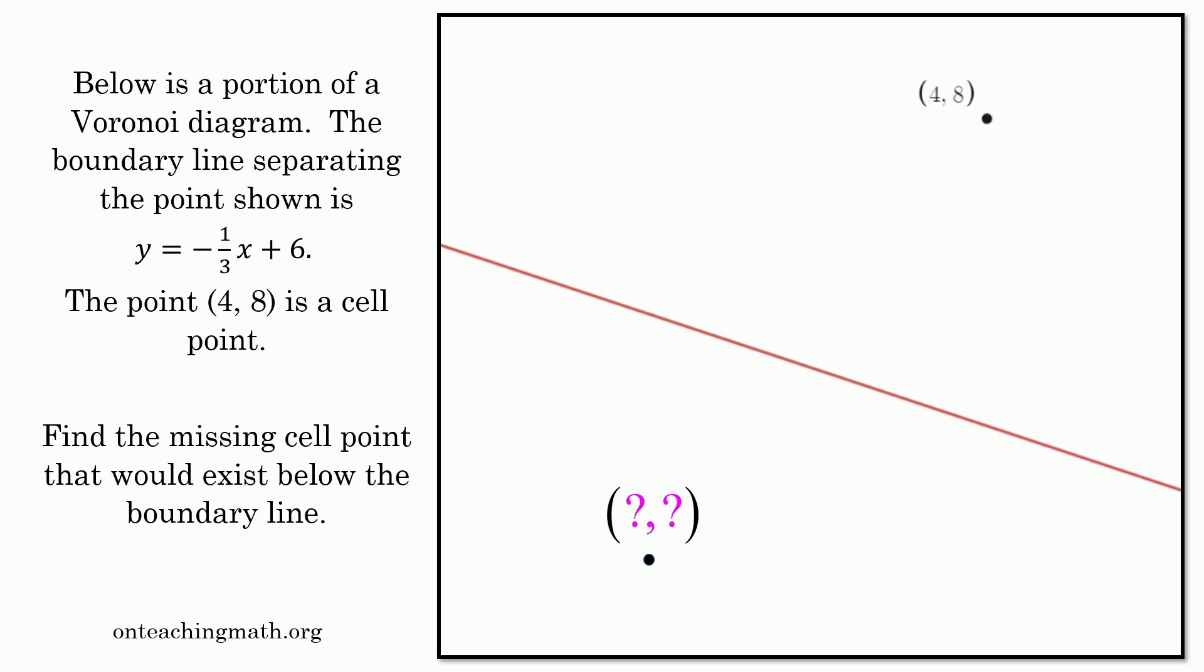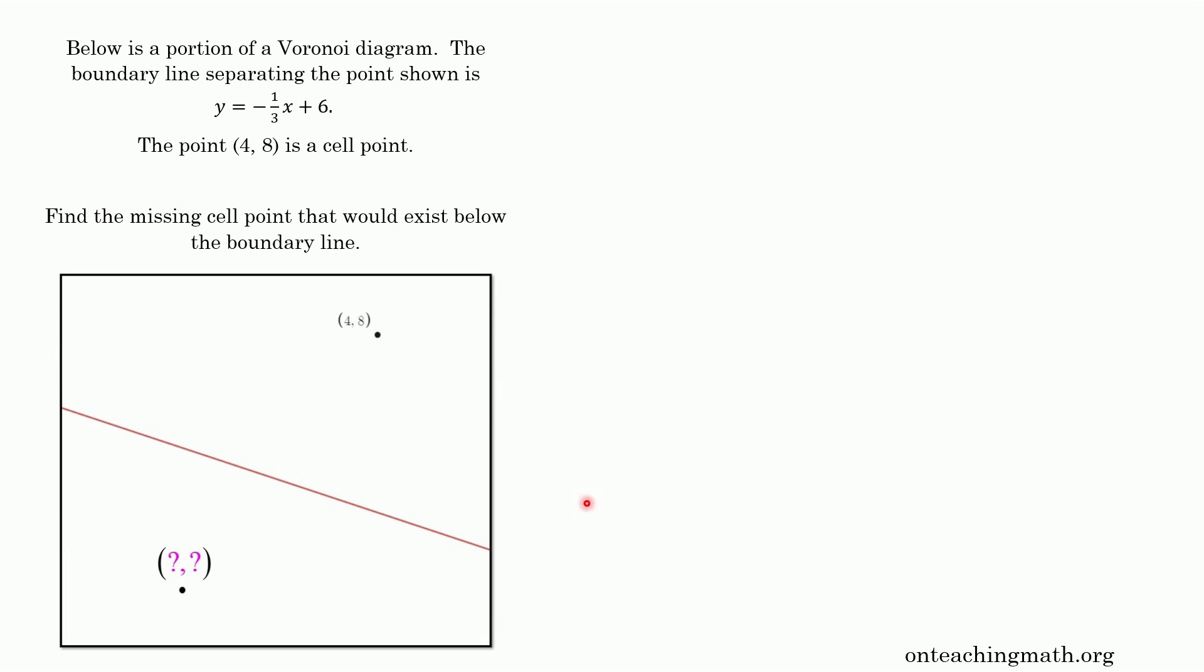So here's our diagram right here. We've got this point 4, 8. We've got this line. It tells us the equation of the line is y equals negative one third x plus six. We have to find the missing point in this other cell down here. So the first key fact is that the line that would connect the two cell points is perpendicular to the boundary line.